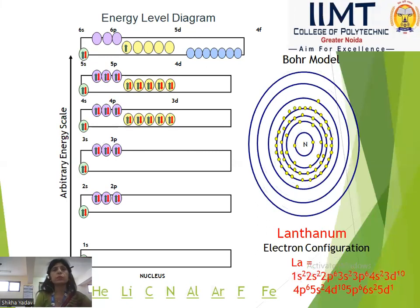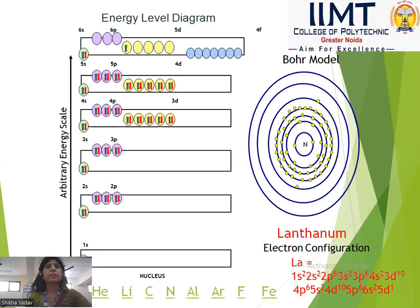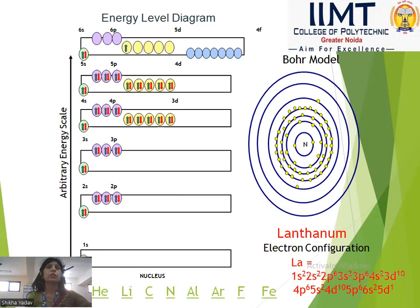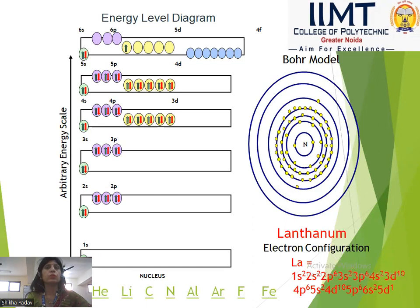Next is lanthanum — which is an exception in chemistry. Its symbol is La. Lanthanum's electronic configuration is: 1s², 2s², 2p⁶, 3s², 3p⁶, 4s², 3d¹⁰, 4p⁶, 5s², 4d¹⁰, 5p⁶, 6s², 5d¹.